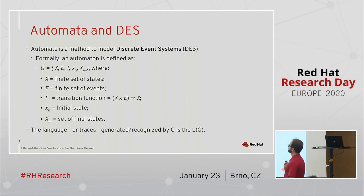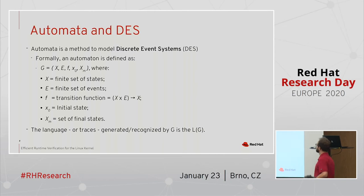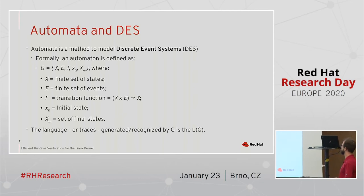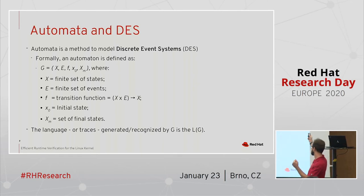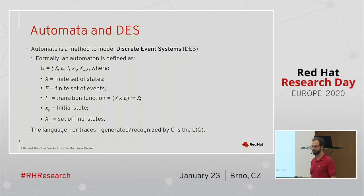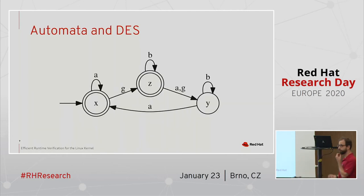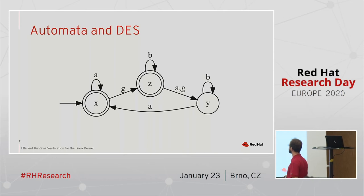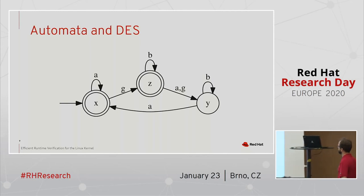Automata is a method for modeling discrete event systems — systems driven by events that occur over time. It has a formal definition that includes a set of states, a set of events, a set of transitions, and transition functions: given a current state and an event, produce the next state. There is one initial state and a set of final states. This doesn't look natural as a formula, but automata have a graphical format that is easier to understand. Here we have the initial state, the final states, and the allowed transitions — so it's easier to express our knowledge this way.